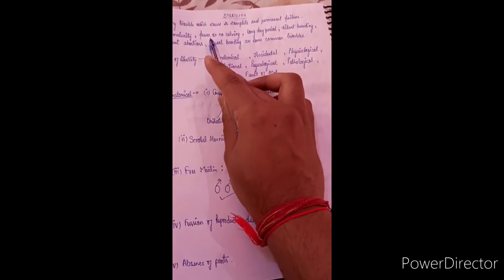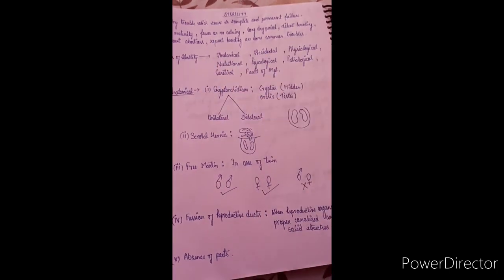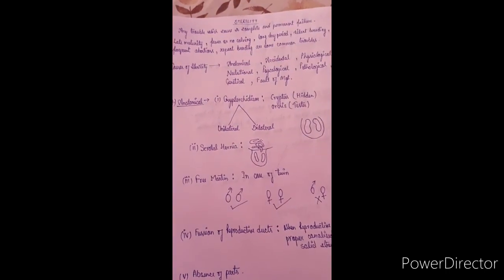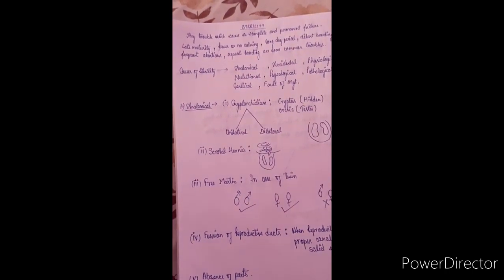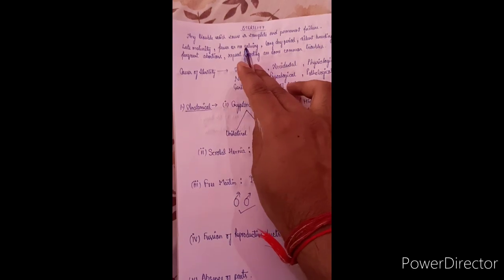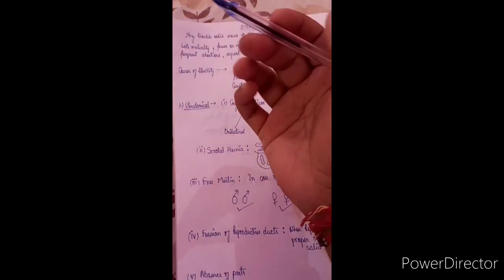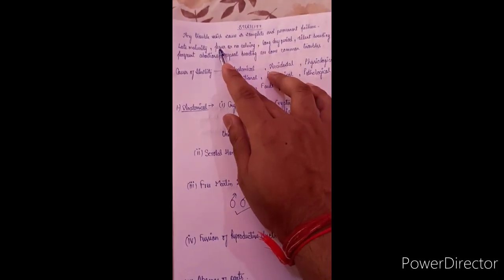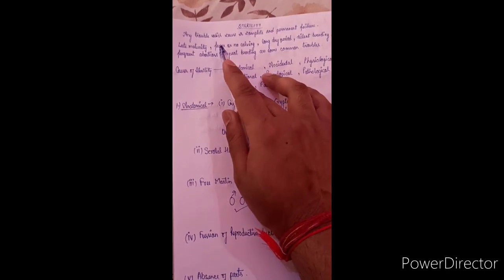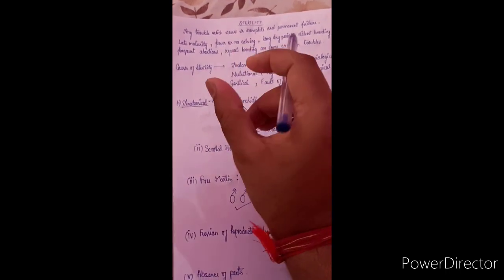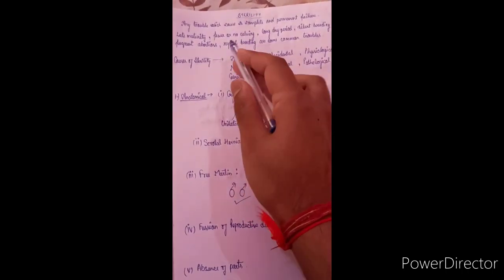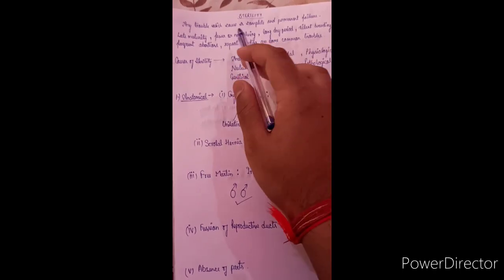The next sign is fewer or no calving. After achieving maturity, proper heat is very important, and after conceiving, after a particular gestation period, your animal should have calving. Calving is the particular term used for parturition in cattle. So if there is fewer or no calving after the gestation period, this is a sign of sterility.